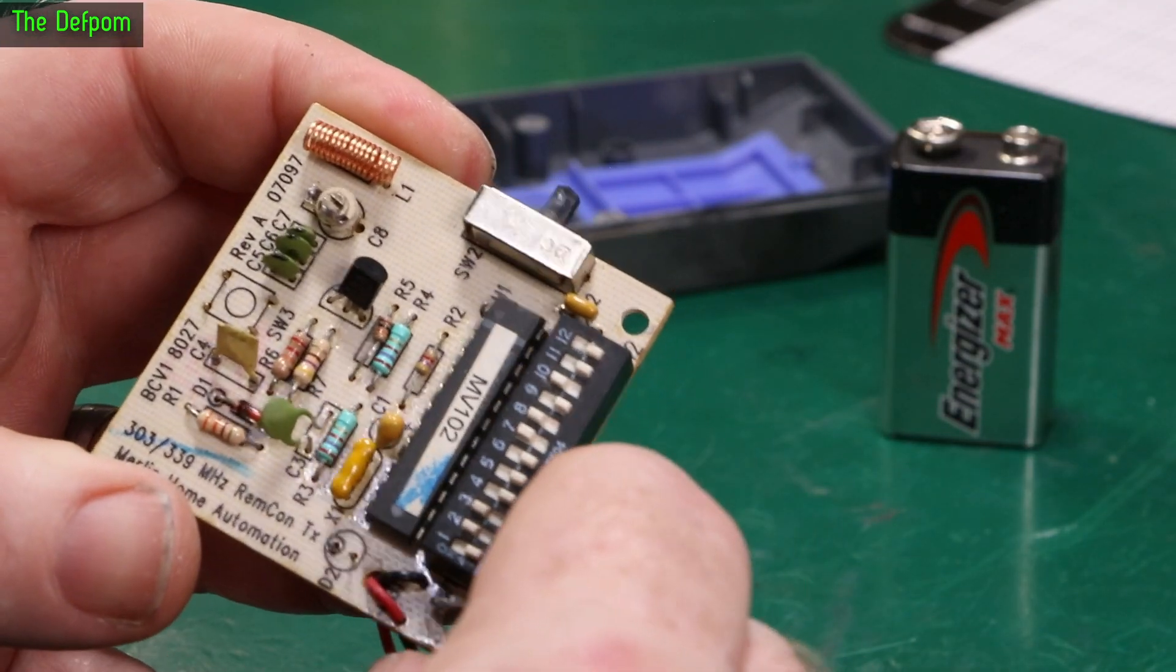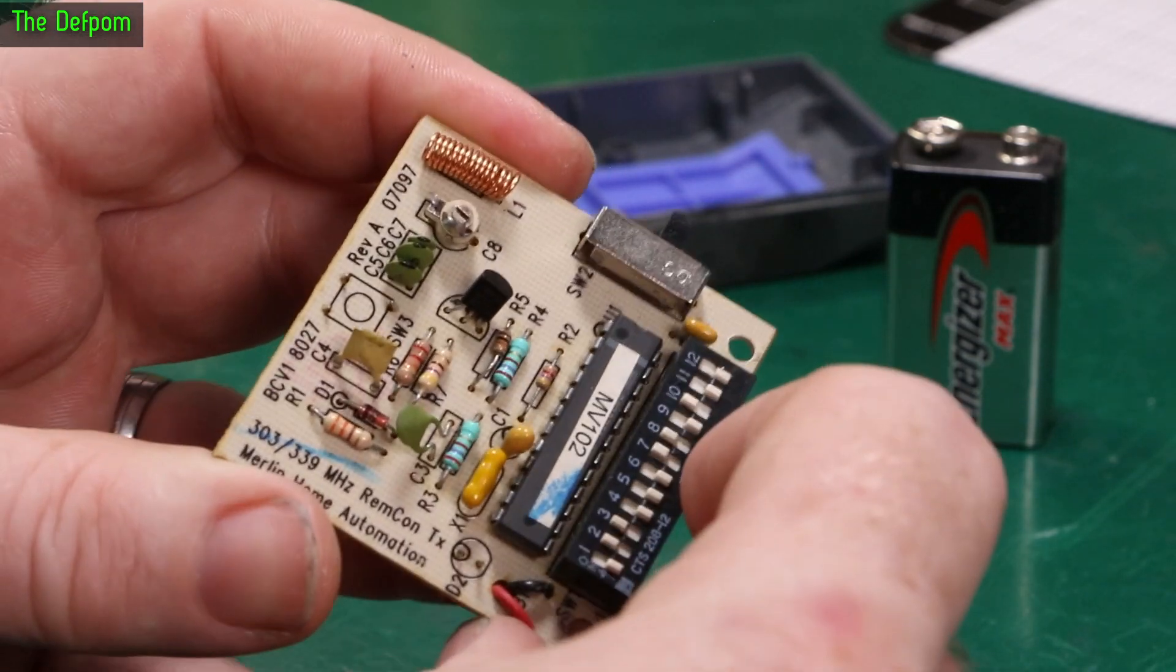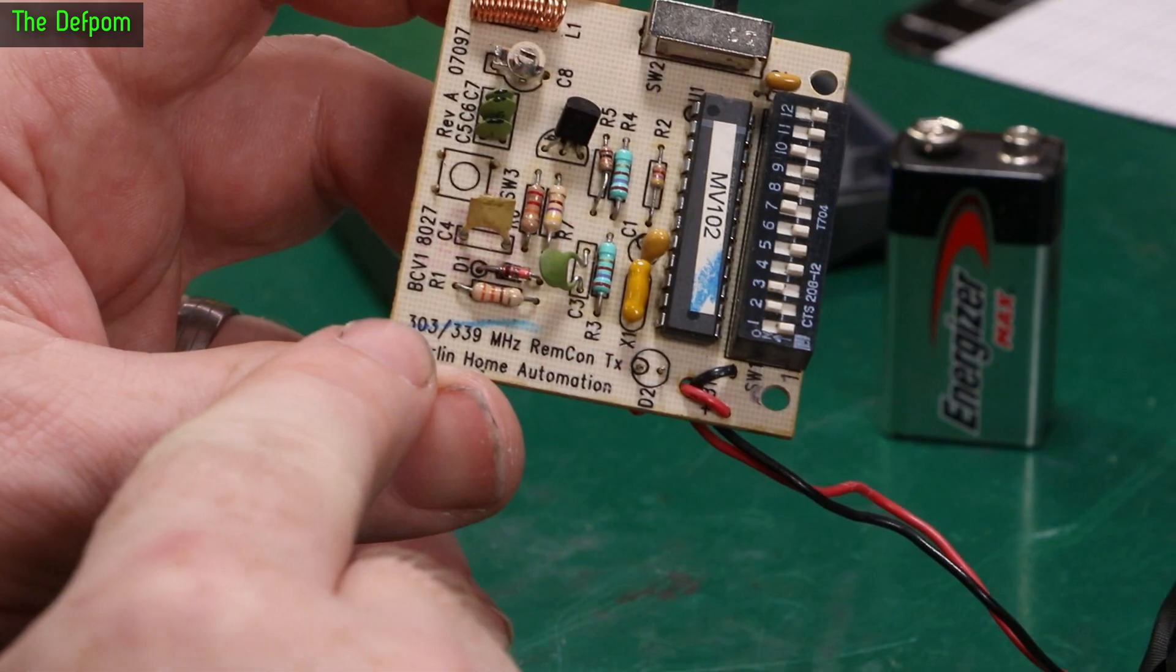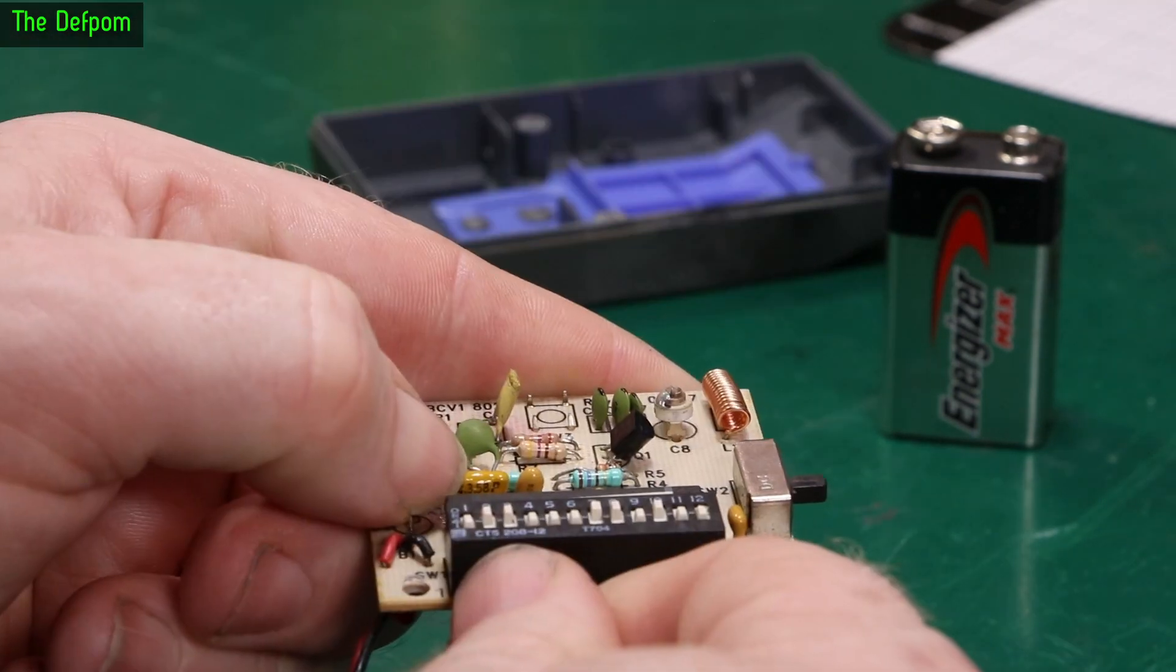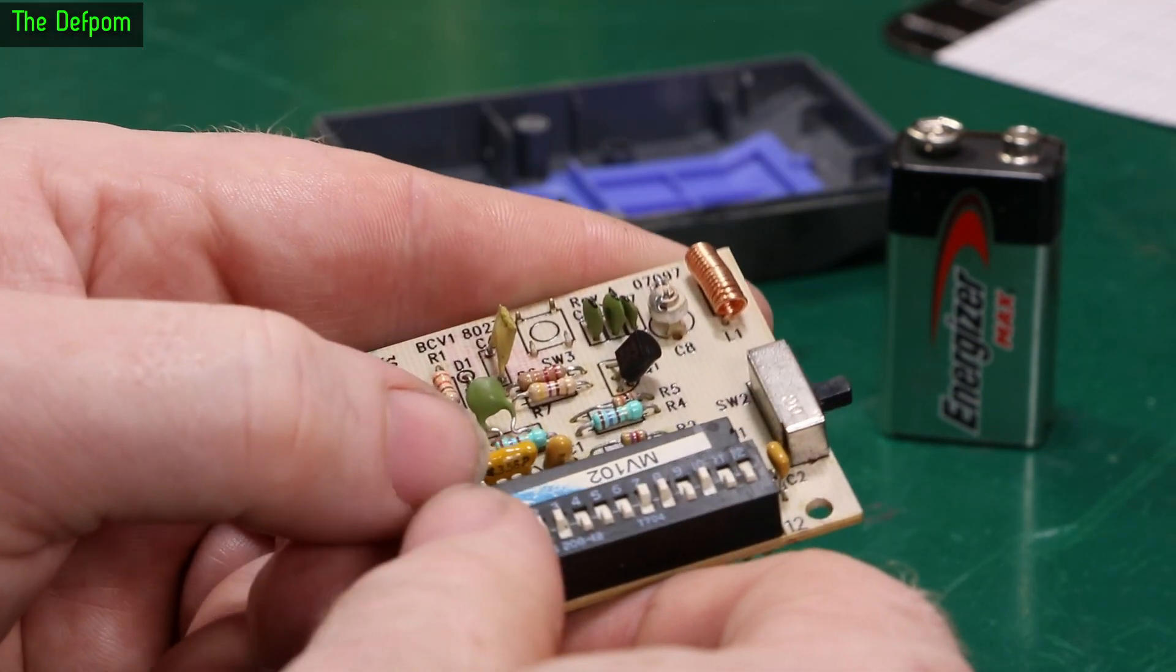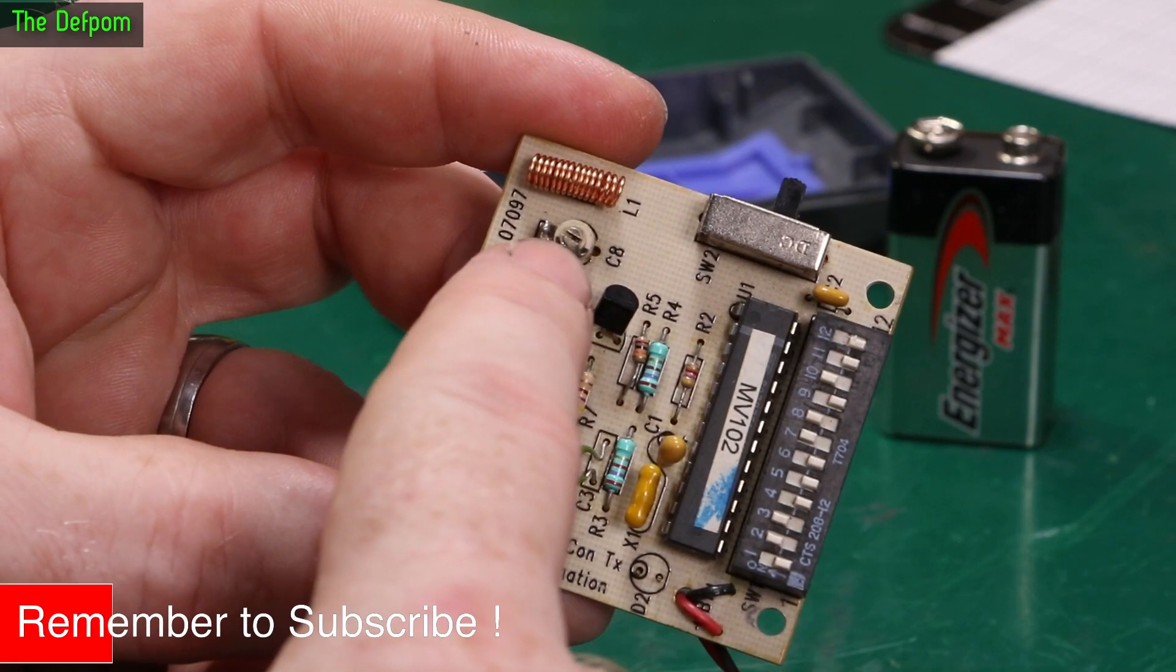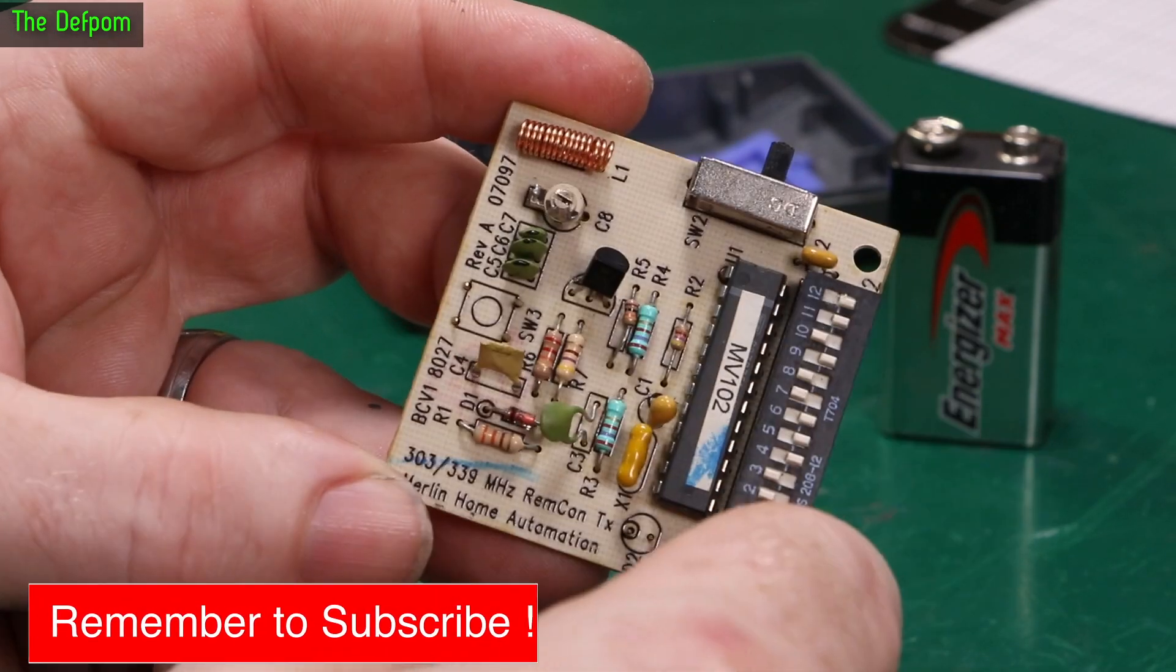Single sided board, cheap circuitry I suppose. It says so right there, 303 or 339 MHz. 3.58, so that's the clock crystal for the chip. Obviously that's tuning over here, so it's probably just a capacitive oscillator sort of thing.